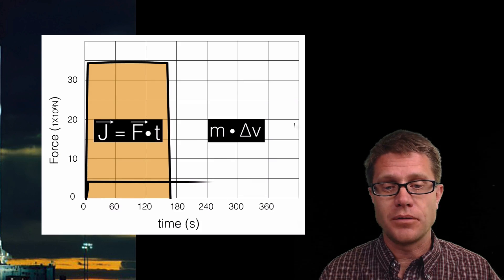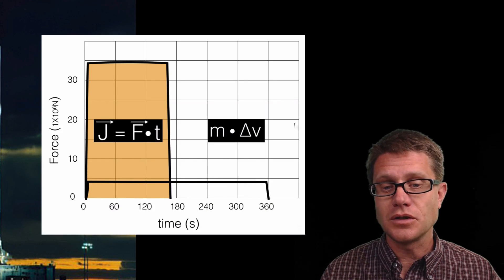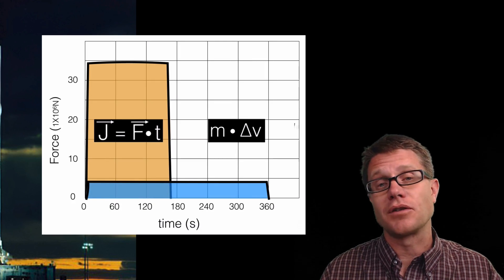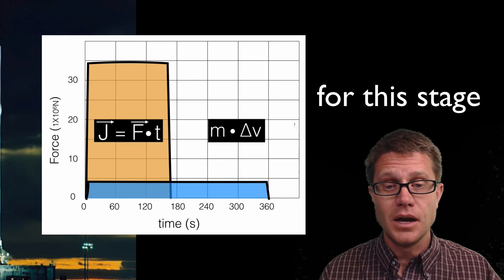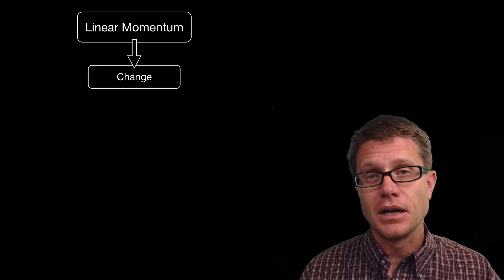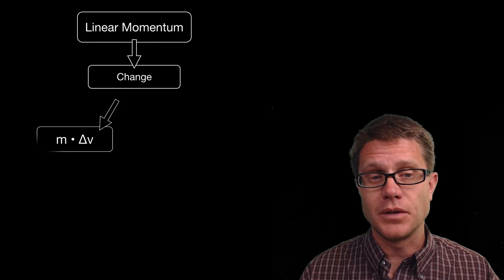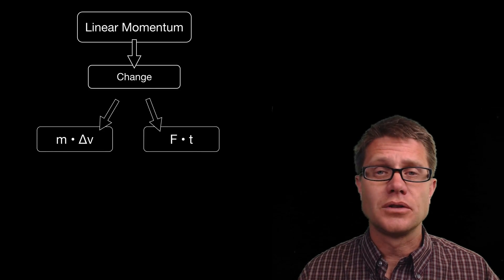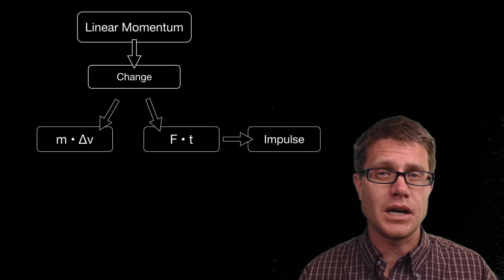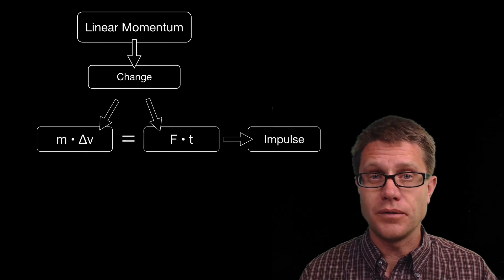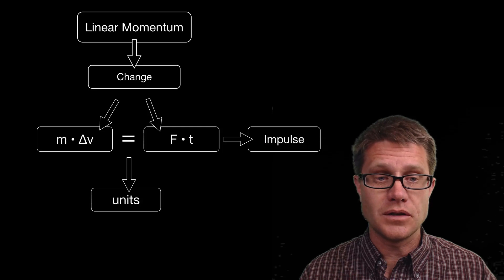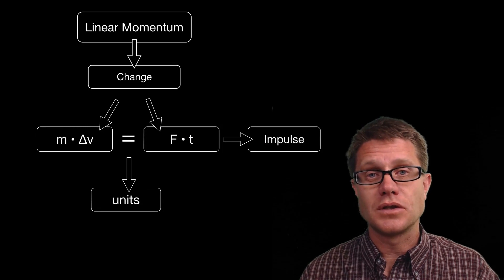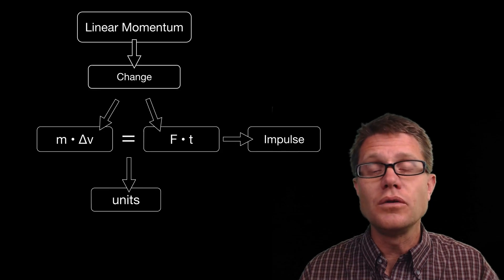For stage 2, the force-time graph shows about 4 million newtons, but it is longer. Since it is longer, we are applying a force for a greater amount of time, so we are going to have a greater change in momentum. The change in linear momentum equals mass times the change in velocity, and it is also equal to the impulse, which is force times time. These two values are equivalent in units — change in momentum is kilogram meters per second, and force times time is newton-seconds — but they are equivalent.